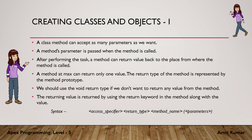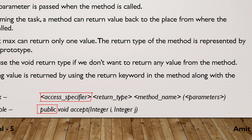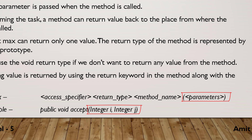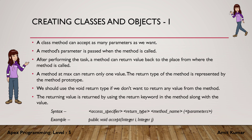The syntax for a method looks something like this. There should be an access specifier, a return type, followed by the method name, and a parameter list within a pair of parentheses. For example, public is an access specifier, void is a return type meaning this method will not return any value. 'accept' is the method name, and integer i and integer j are two parameters we can pass when calling this method.